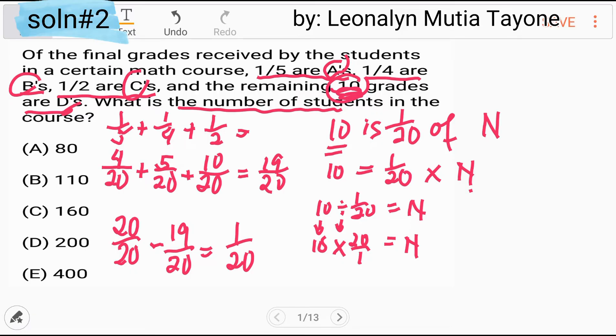Now pwede na tayo mag-multiply, numerator, numerator. Remember, lahat ng mga whole numbers, ang numerators, ang lahat ng mga whole numbers, mayroon yung automatic na denominator na 1. So 10 times 20 equals 200. And that is the answer.